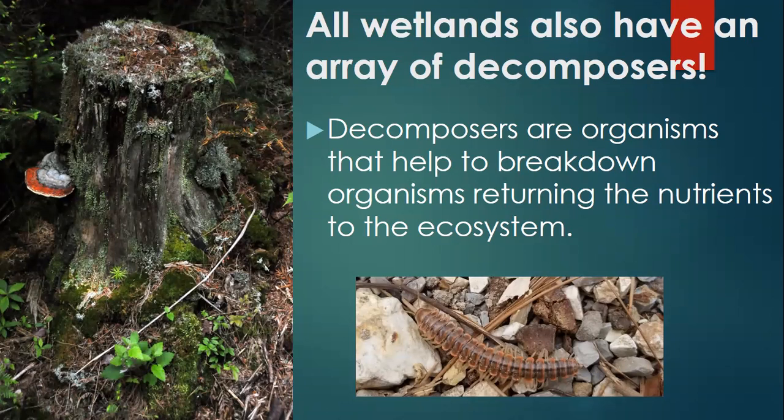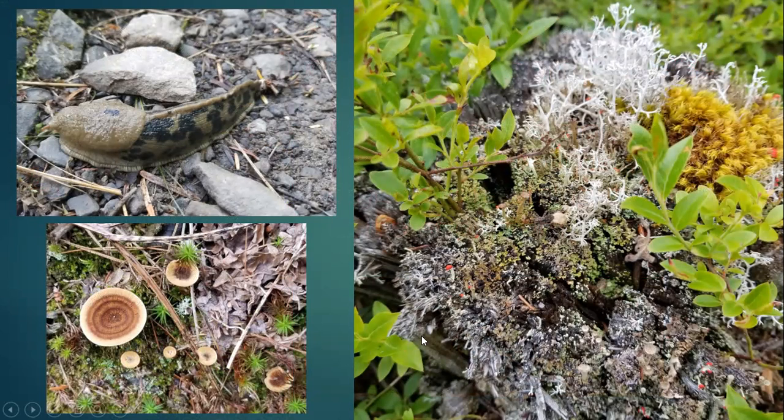In wetlands of all types — marshes, swamps, and bogs — you're going to see a lot of decomposers. This one is in the marsh section: you can see mushrooms, lichen, another decomposer on the ground, slug fungus, and some really beautiful fruiting bodies of mosses and lichens.